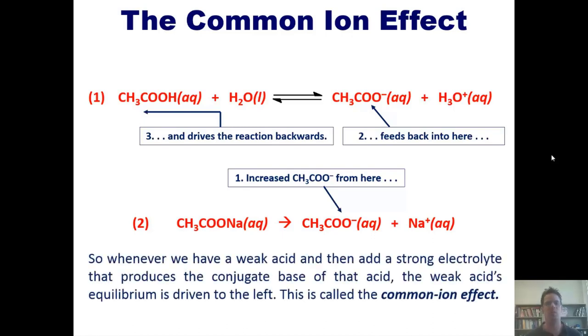Whenever we have a weak acid and we dissolve a strong electrolyte that produces the conjugate base of that acid, the weak acid's equilibrium will get driven to the left. This is called the common ion effect. That takes us to a wonderful problem.